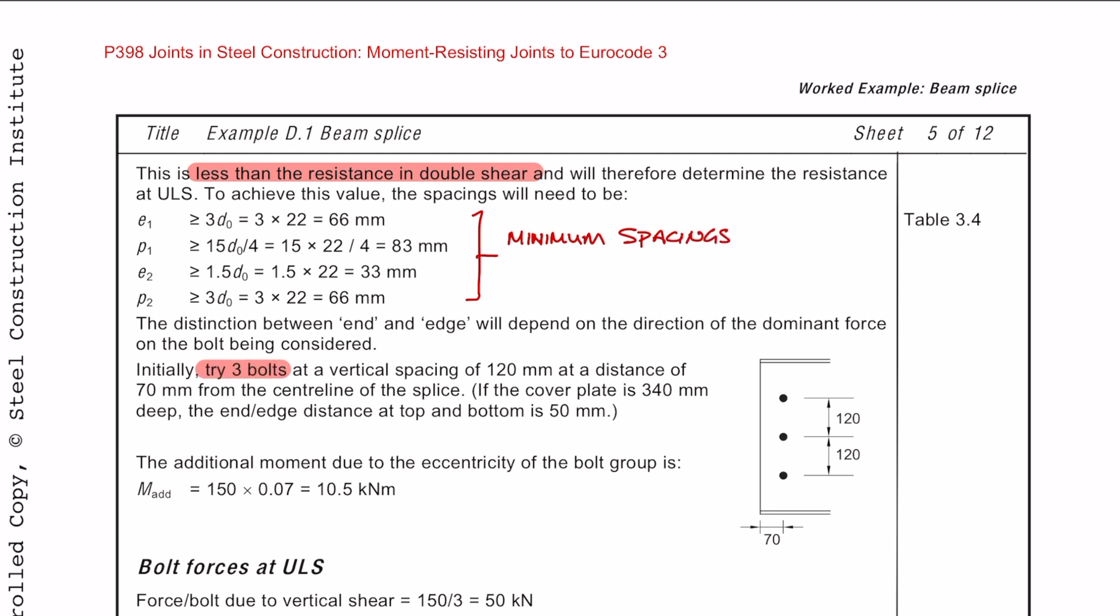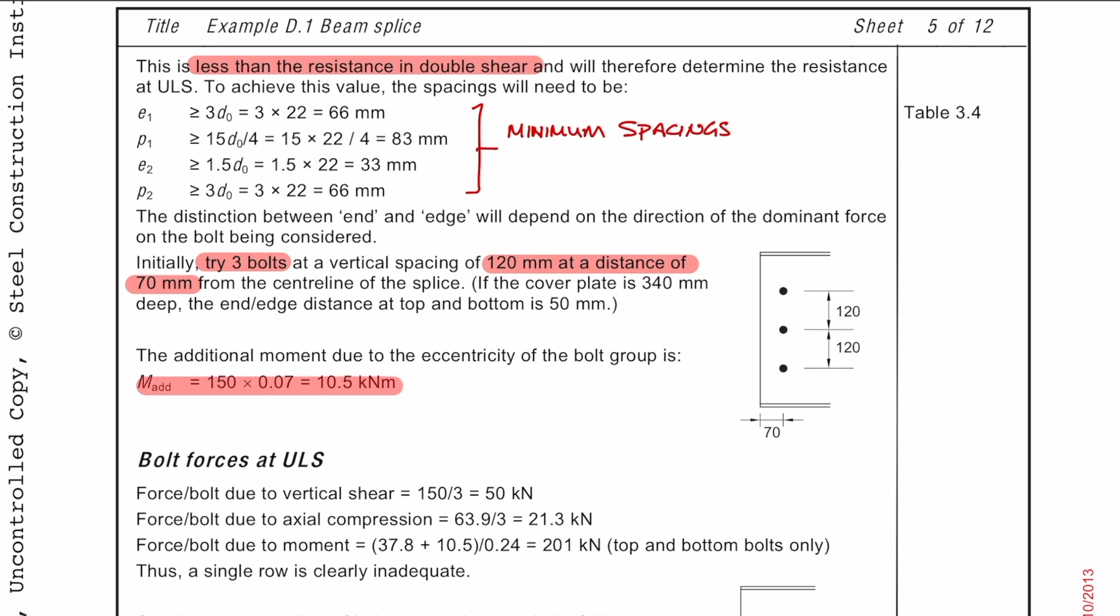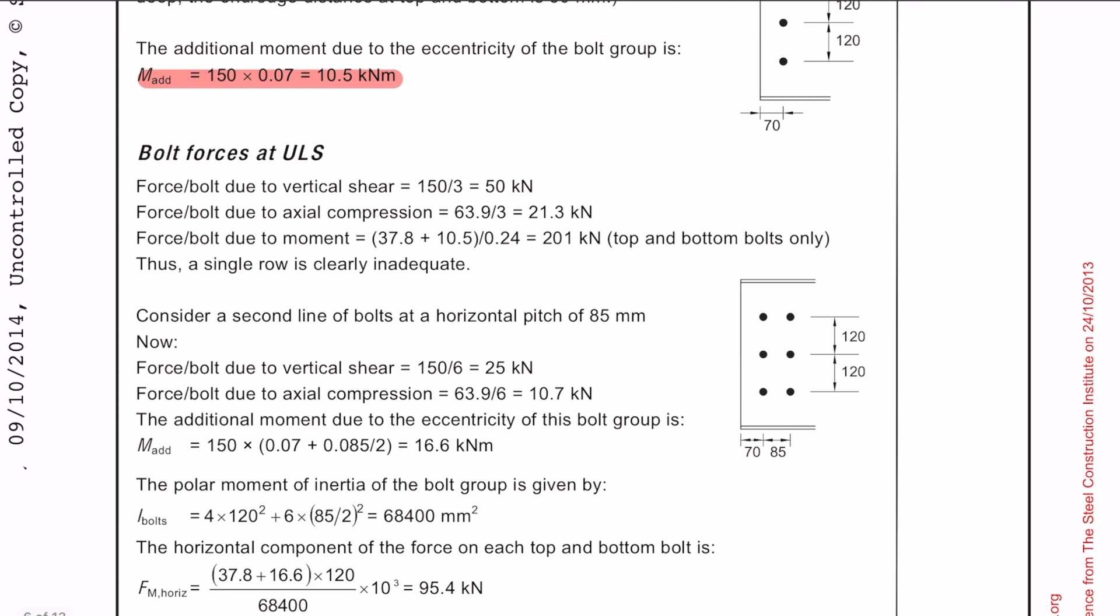So we're just going to initially try three bolts at a vertical spacing of 120mm distance. Because we need a 70mm distance from the center line of the splice, there's going to be an additional moment due to the eccentricity of the bolt group. So all you do is multiply the shear force by the eccentric length. So as you can see here with only three bolts, the bolt resistance is not enough to resist the shear, axial and bending moments.